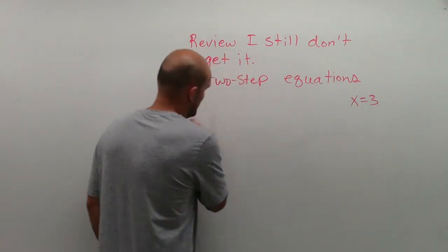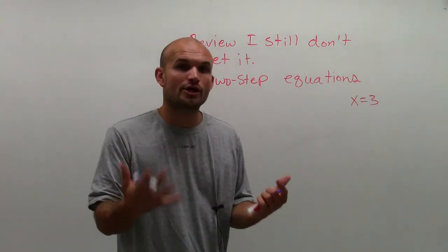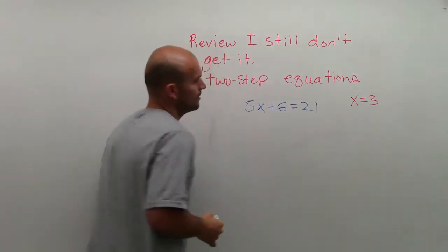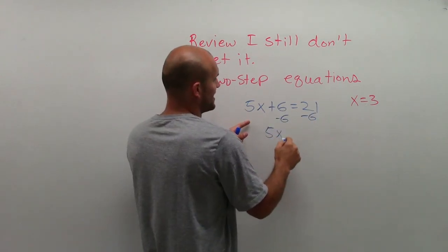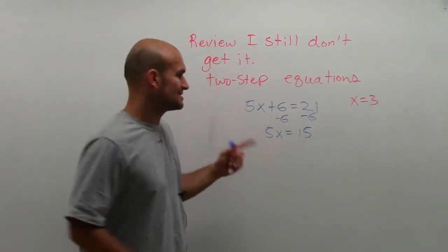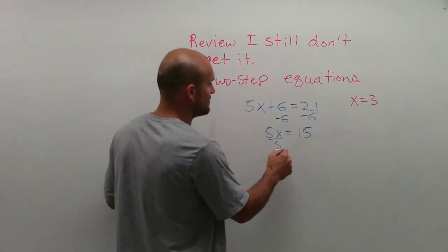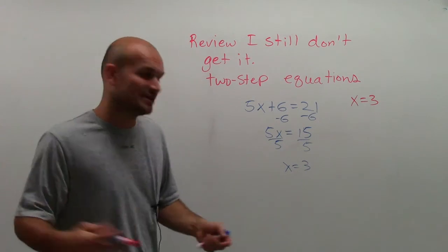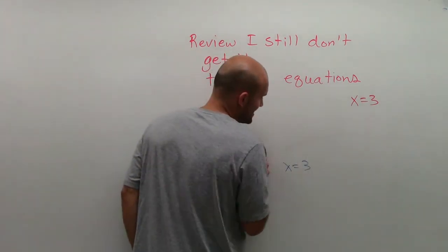Let's look at equivalent equations and see why that worked. I had 5x plus 6 equals 21 — we know the value is 3. When I complete my first step, I get 5x equals 15. Notice that the value of 3 still works for this equation — these are equivalent equations. That's why we use the addition property of equality, subtraction property of equality, and so forth: they produce equivalent equations. When I divide by 5 on both sides, I get another equivalent equation — one that gives me the actual value of x.